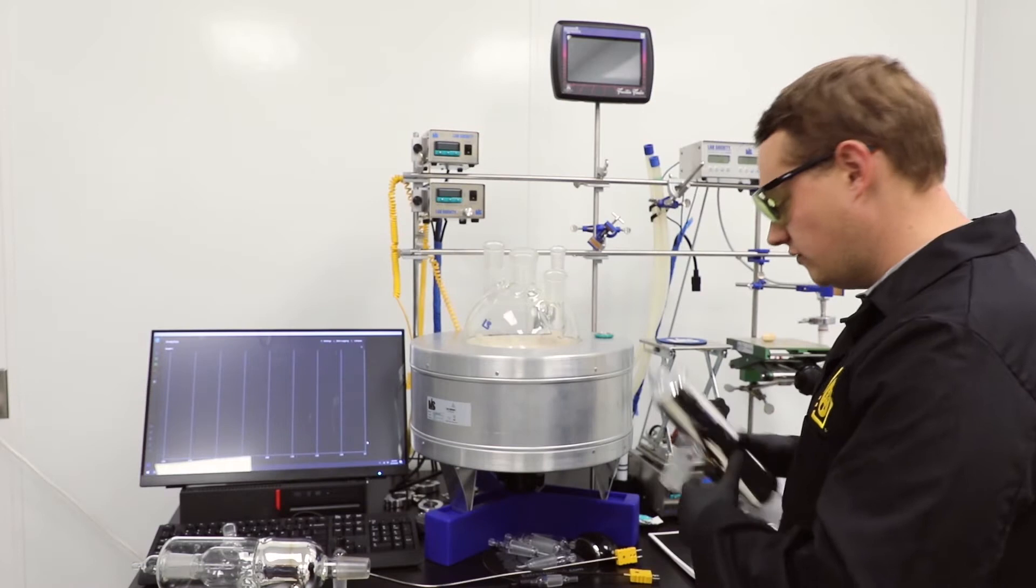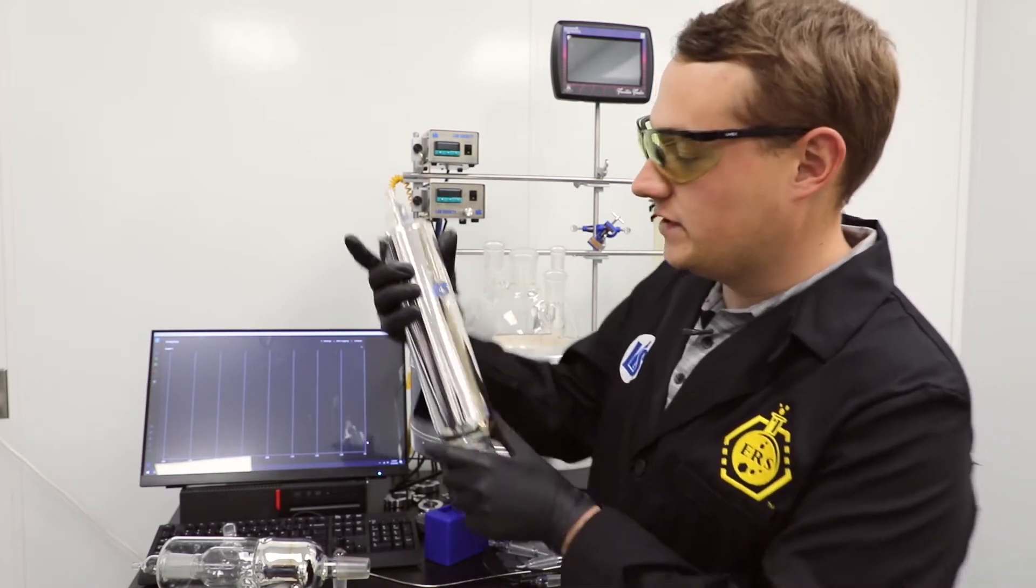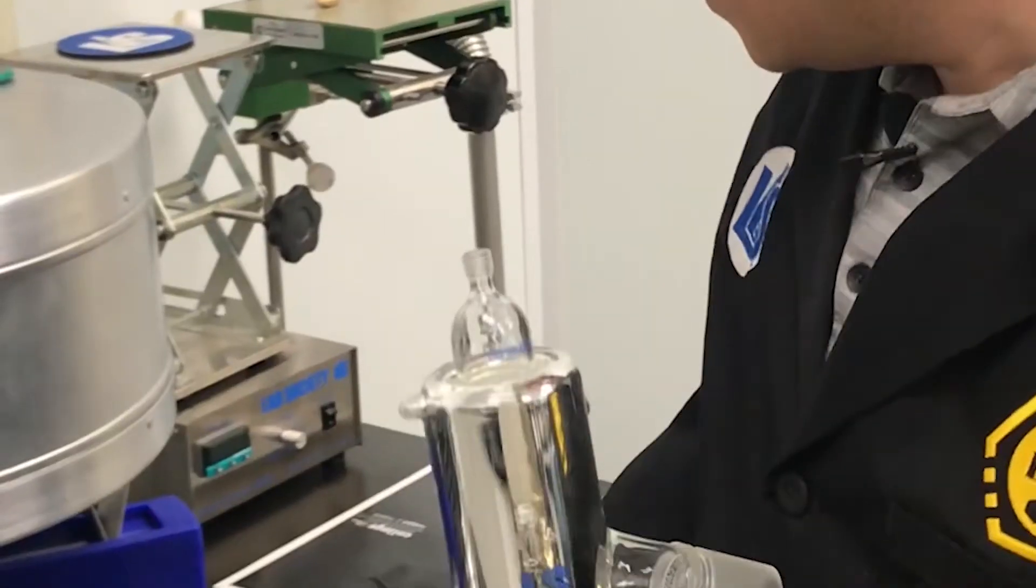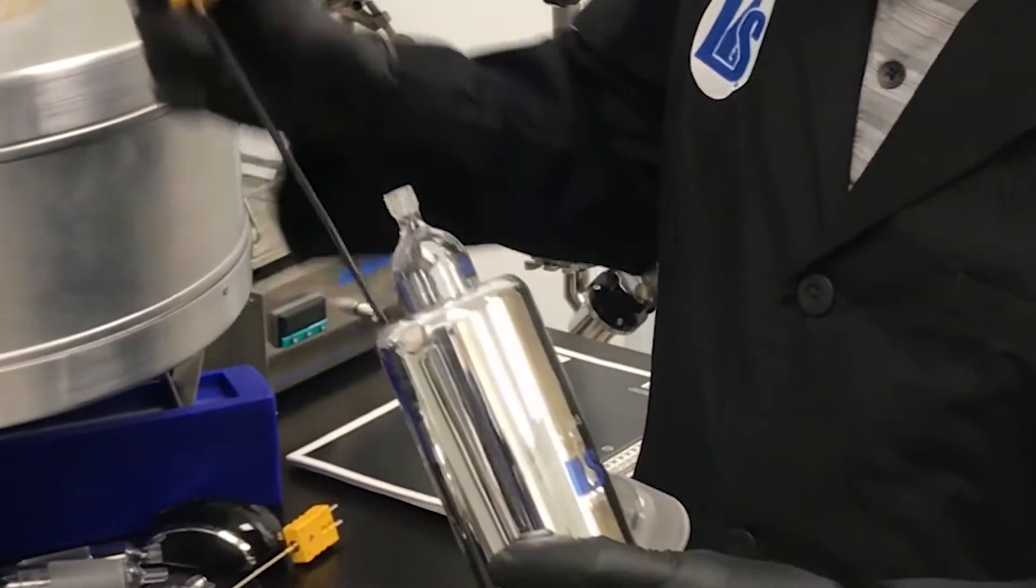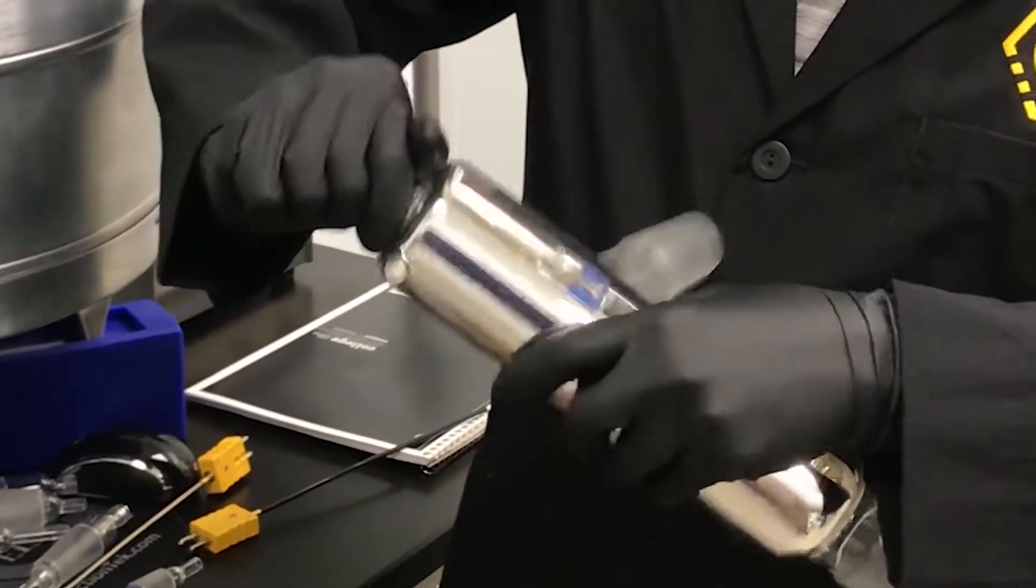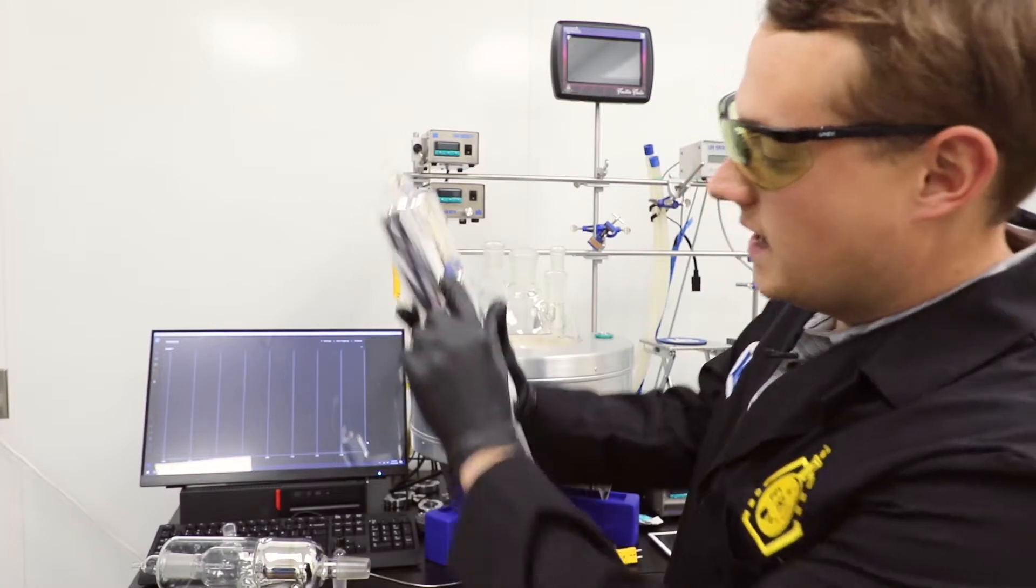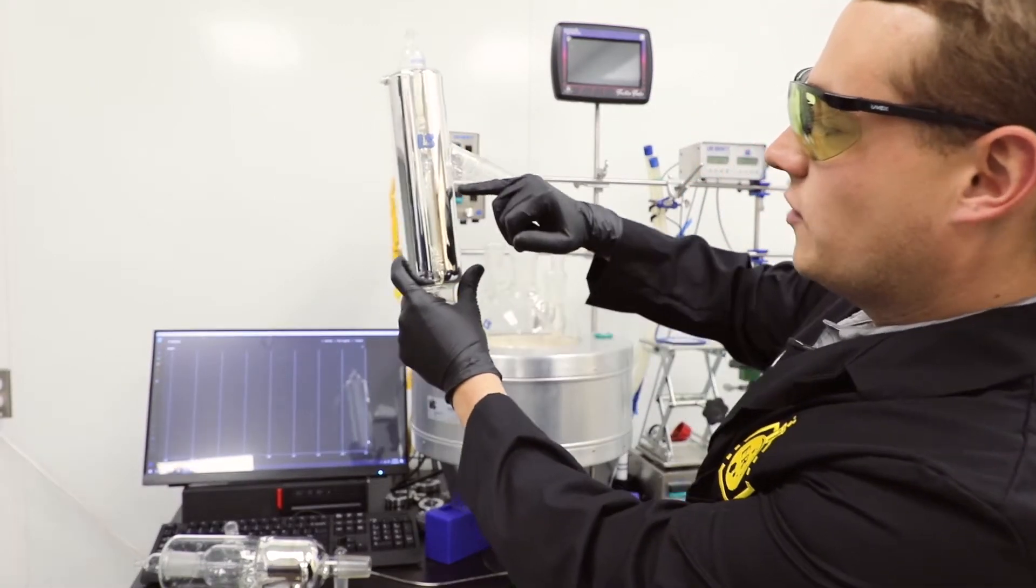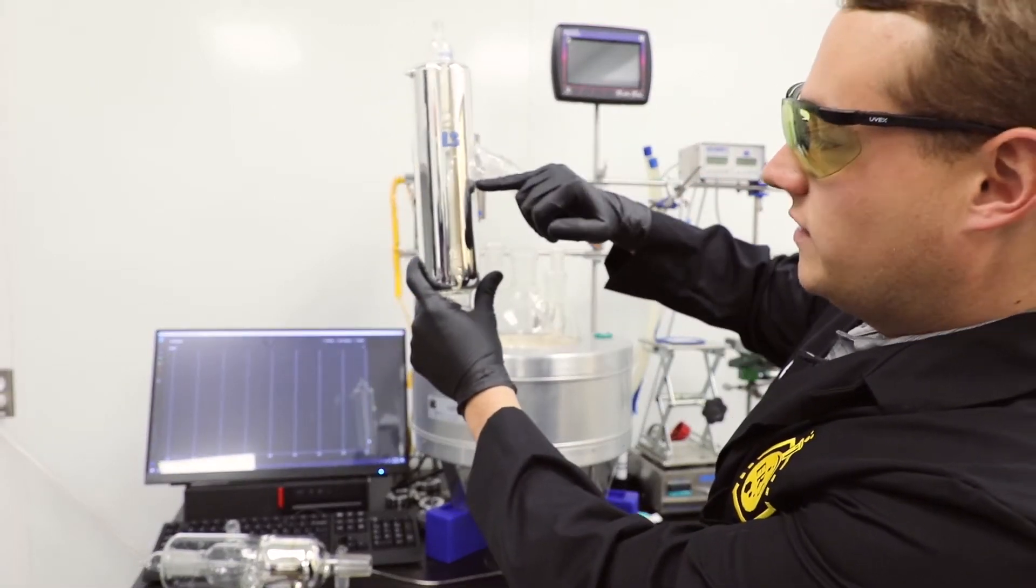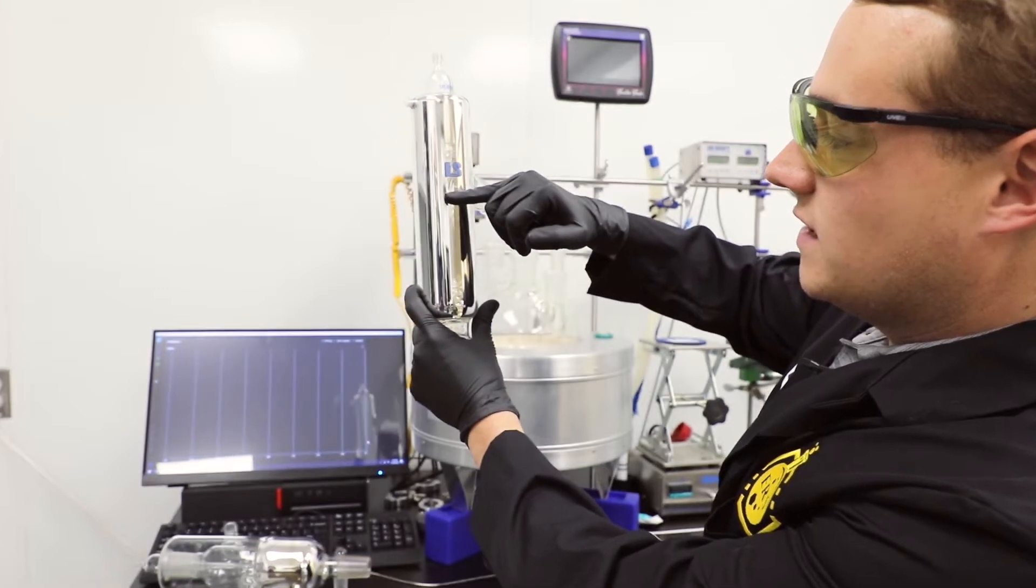First we're going to do height-based thermocouple placement inside of a standard distillation head. It's going to be kind of hard to see because our heads are silvered, but right now I've already got my thermocouple greased and put into the head. We have the vapor outlet over here to the right and this is the approximate height of it inside of the head.